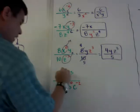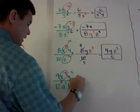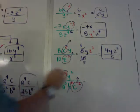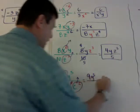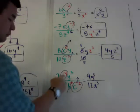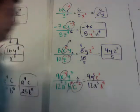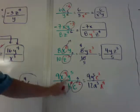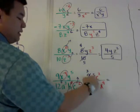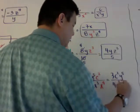Here's one more. I circle x to the negative 4 and move it down, cross out b to the zero, and circle c to the negative 2 and move it up. I copy down 9y to the fifth on top and 12a to the third on bottom. x to the fourth moves down, c squared moves up. Then I simplify 9 over 12 by dividing by 3 to get 3 over 4, and put everything in alphabetical order. The final answer is 3c squared y to the fifth over 4a cubed x to the fourth.